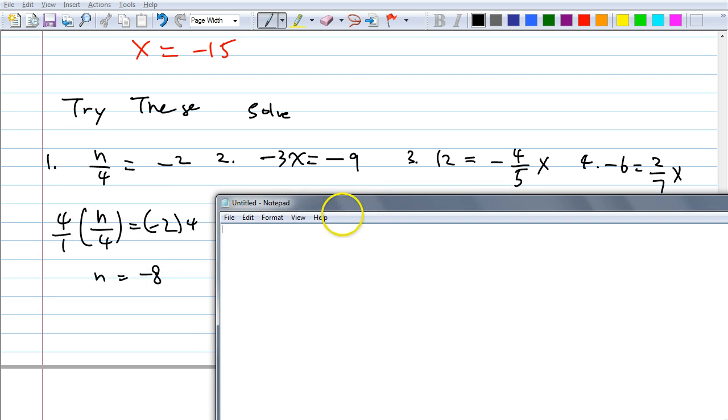Very good. So when I do, did y'all get x equals negative 8? Nobody put down 8, right? Because that would be wrong. It's negative times positive, so you get negative 8.